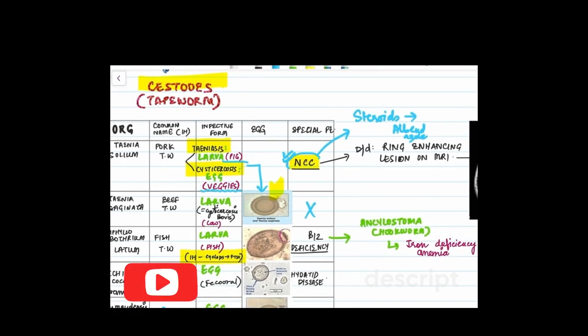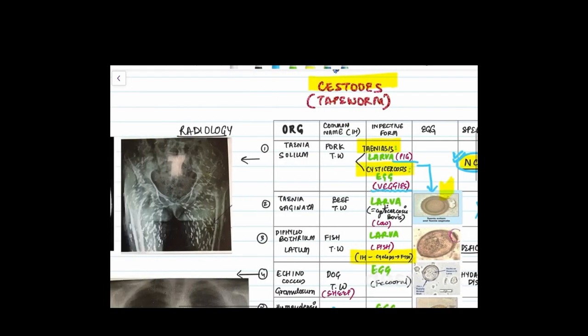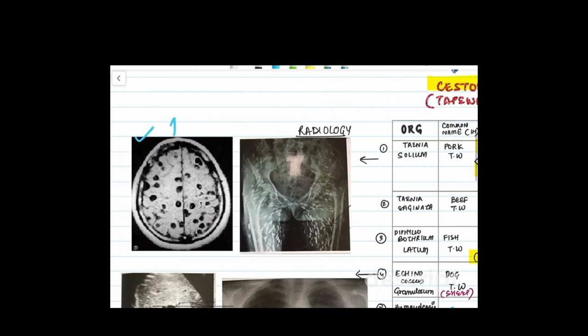Now neurocysticercosis comes as one of the DDs of ring enhancing lesion on MRI. This is the lesion on MRI. Do tell me in the comment section the other DDs. Talking about the radiology of Taenia solium, you can easily see this is the radiology of NCC which is frequently asked. Second is when the organism spreads throughout the body it can also spread in the muscle and that's why we see this rice grain calcification present in the thigh muscles. Most common site of cysticercosis is brain and the second most common site is the muscle.